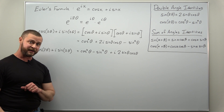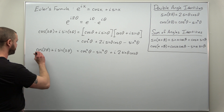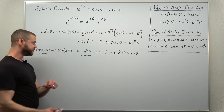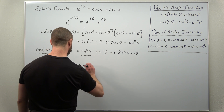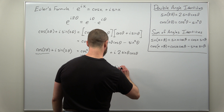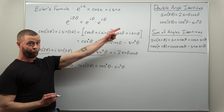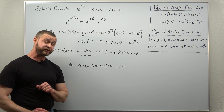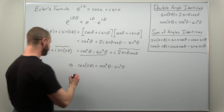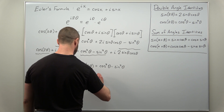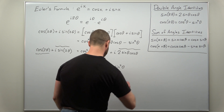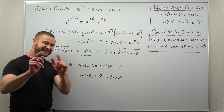To get the double angle identities, we equate the real parts on each side: cosine of 2θ equals cosine²θ minus sine²θ — that's our first double angle identity. Then equating the imaginary parts gives us sine of 2θ equals 2 sinθ cosθ. And that's how we use Euler's formula to get both double angle identities.